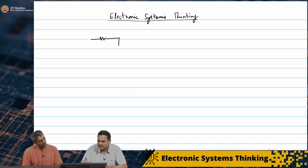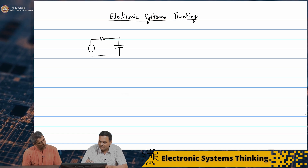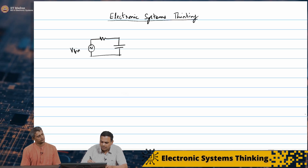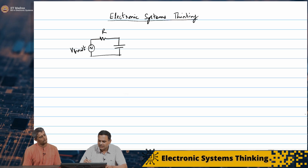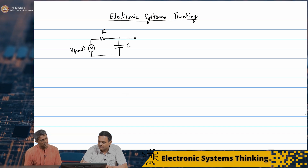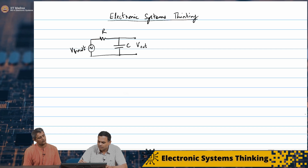Hi Janakiraman. Hi Ani. Continuing on the topic of filters, can we just redraw that RC low-pass filter that we had? I think we took a series R, a shunt C, and we gave an input voltage — a sinusoidal input, some V sin(ωt). I'll call this R and C. And if I'm not mistaken, we took the voltage across the capacitor as V_out(t).